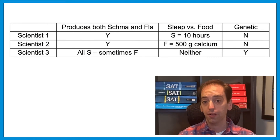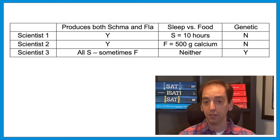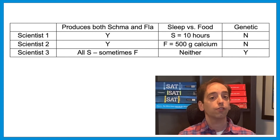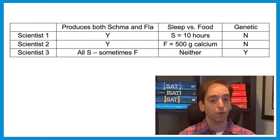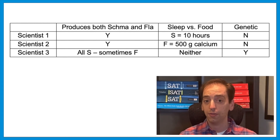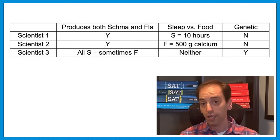Your graphic doesn't need to look exactly like this, but here are the key points you want to hit. For scientists 1, 2, and 3 going up and down, you might list across: which enzyme they produce, whether it's based on sleep or food, or whether it's genetic. Scientist 1 says they produce both schmata and phlegon, and it's all about sleep — 10 hours a night — so not genetic. Scientist 2 agrees schmata and phlegon are both produced, but says it's about food — 500 grams of calcium — also not genetic. Scientist 3 says they all produce schmata, but only sometimes phlegon, and sleep or food don't matter — according to this scientist, it's genetic. Notice how they sprinkle in a little outside science with the genotypes in that third passage.